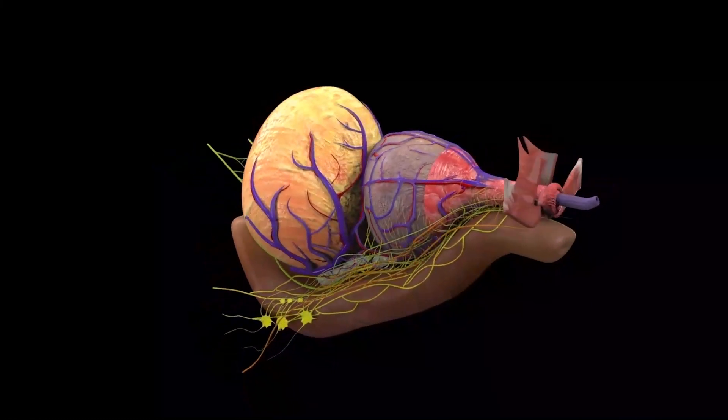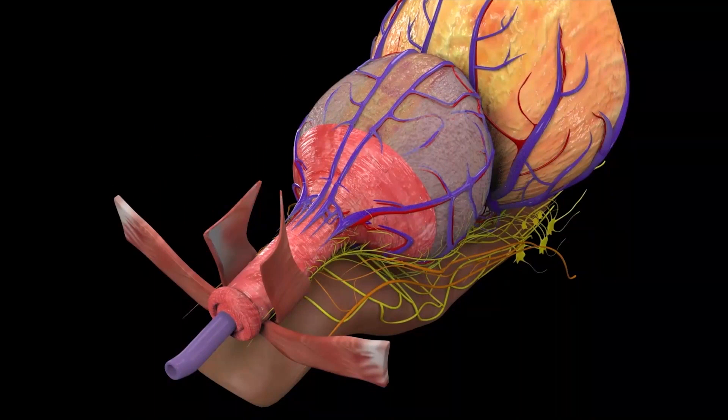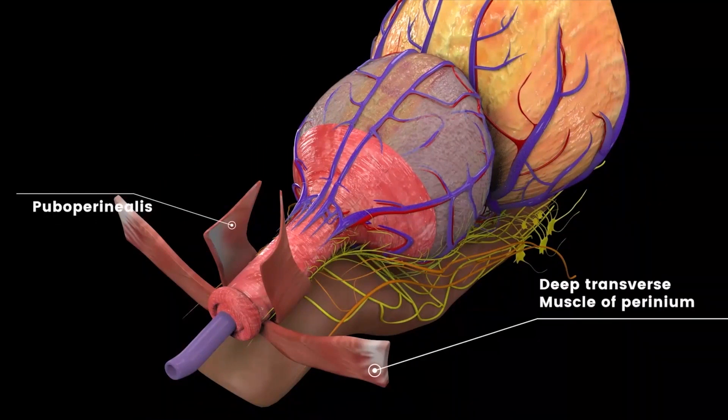The puboperinealis flanks the prostatic urethral junction and acts as a hammock supporting the urethra posteriorly and is responsible for the quick-stop phenomenon of urination.